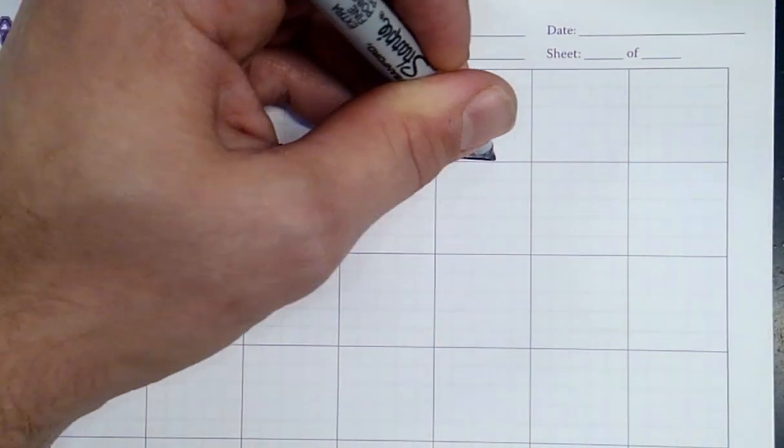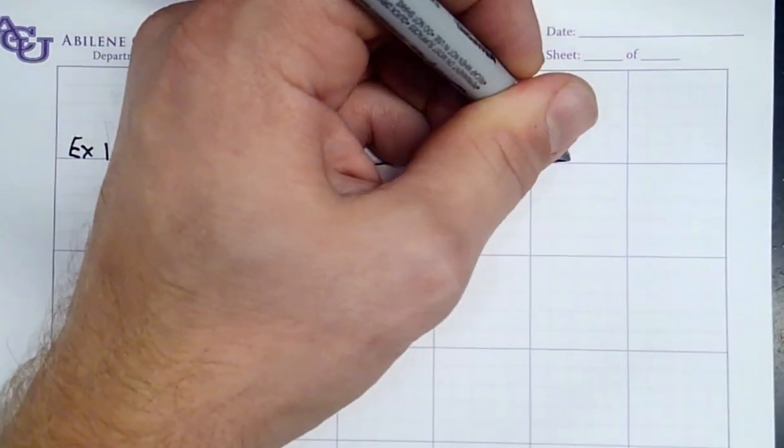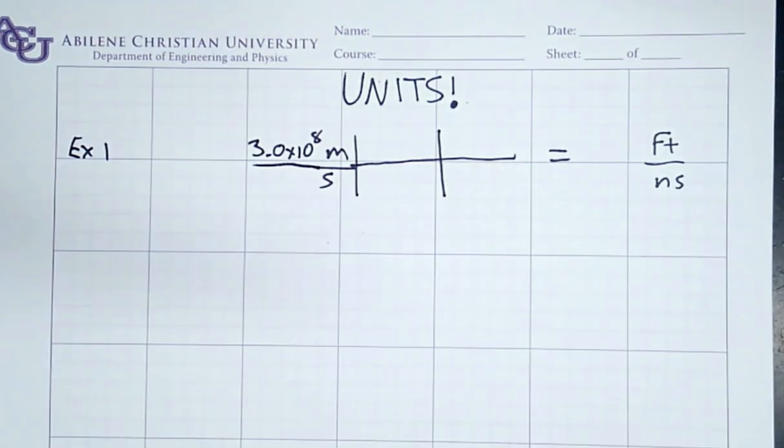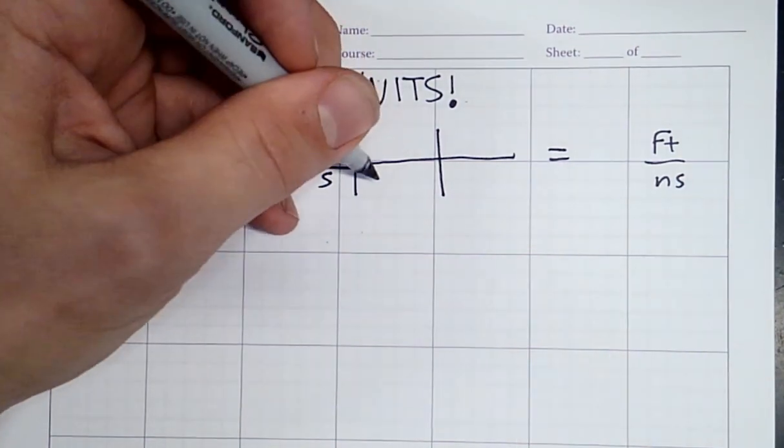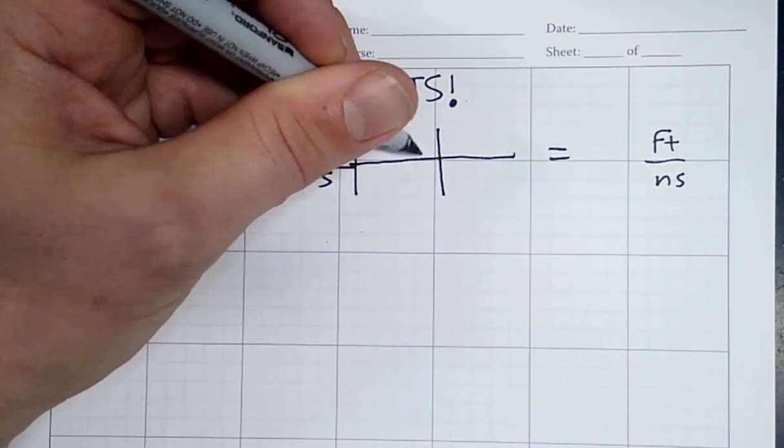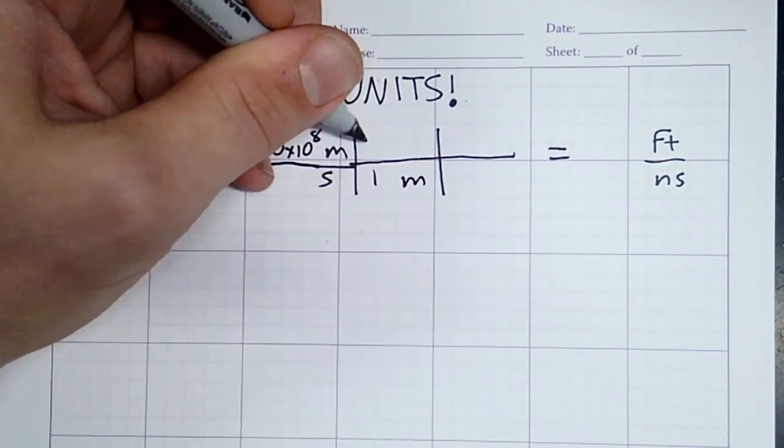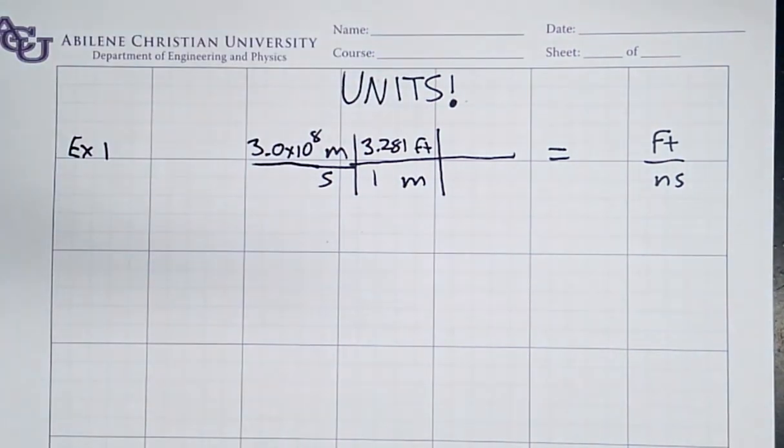Let's draw a couple of lines here. What I want to do is end up in something that is equal to so many feet per nanosecond in this problem. I need to turn my meters in the numerator into feet in the numerator. So I'm going to multiply by a factor here, which is equal to 1. 1 meter equals 3.281 feet. Now, my meters will cancel and I'll be left with feet per second.